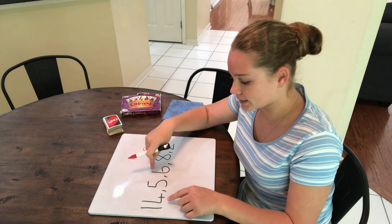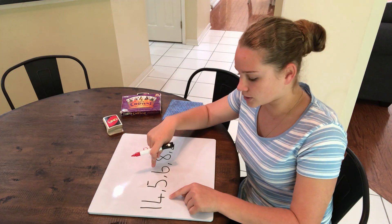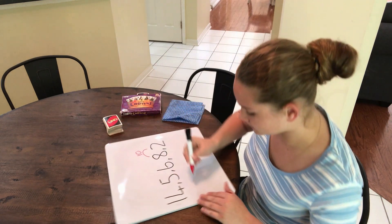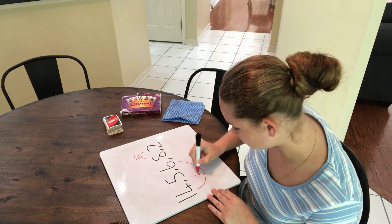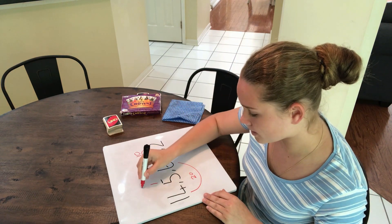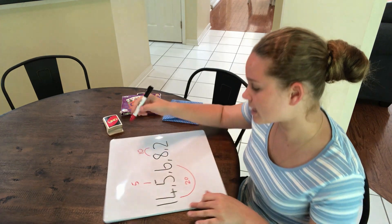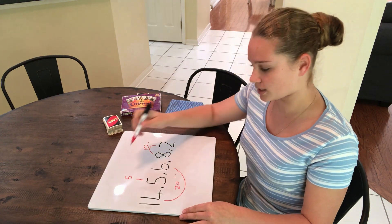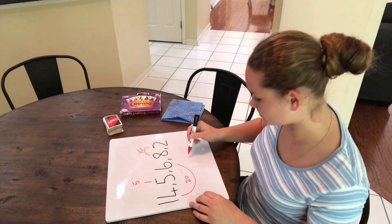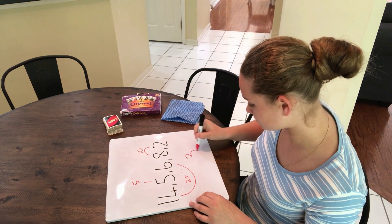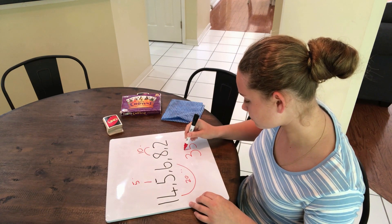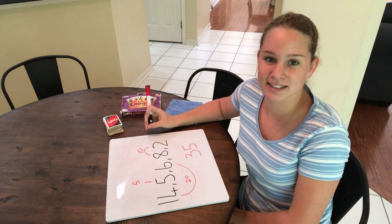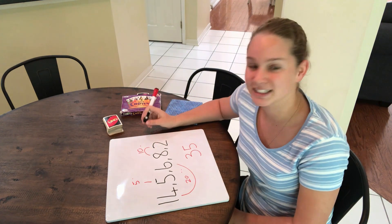Now I know 6 and 4 is 10, so 6 and 14 must be 20. And then I have 5. So I'm left with 10, 20, 30, 35. Now remember, with adding you can go in any order — it doesn't have to be left to right. Thanks.